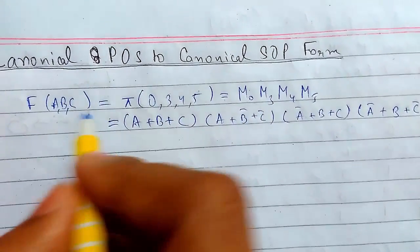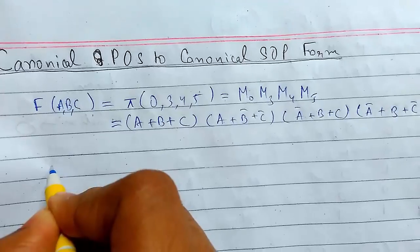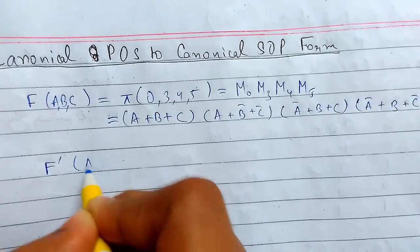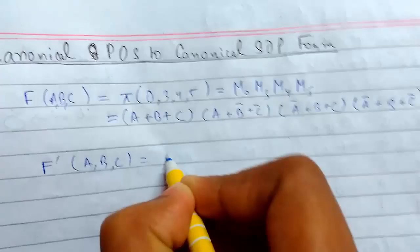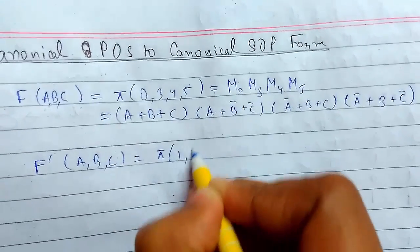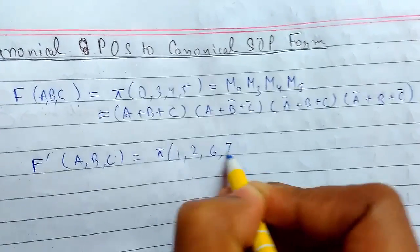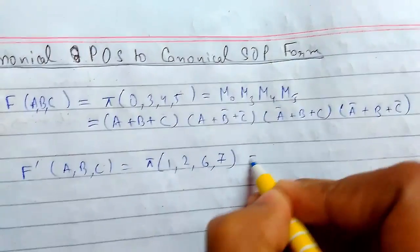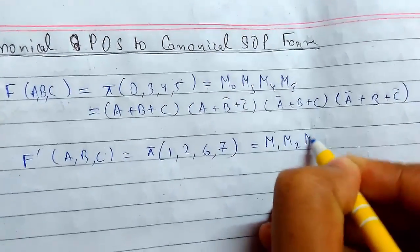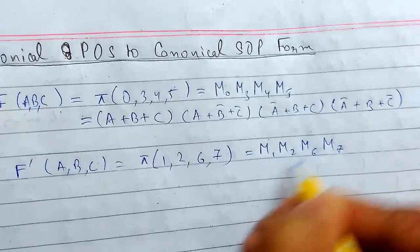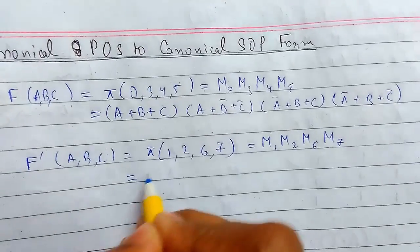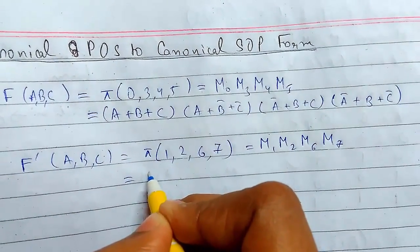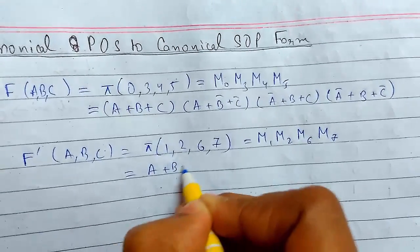Now the complement of this function will be F'(A,B,C) and that must be all the missing terms that are not here. These are the missing terms. We will write this as m1, m2, m6 and m7. I will write the max terms of all of it again.